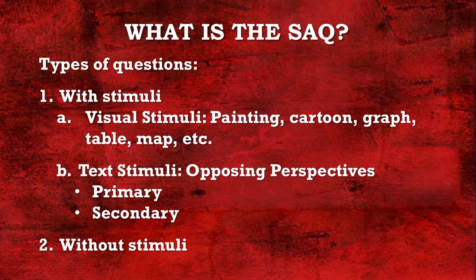So what is the short answer question? You'll have two different types, but there are different variations of them. The first one is with stimuli. Anytime you see that word 'stimuli' in AP US History, it's meant to jog your memory and get a response or reaction. Visually, you may be given a painting, cartoons, data, graph, map, or any of those sorts of things, and you answer questions that go along with them.